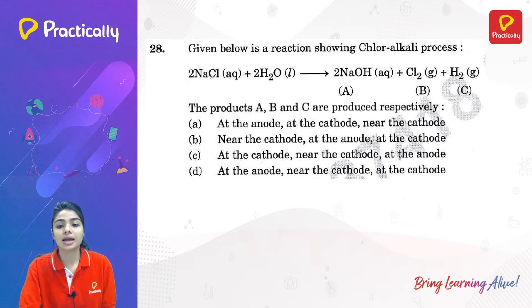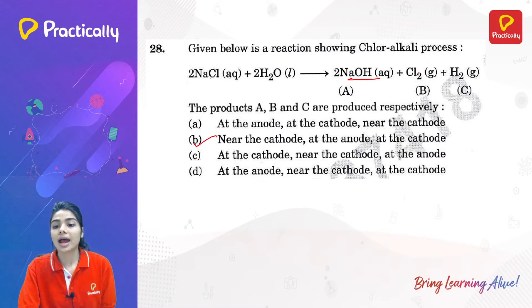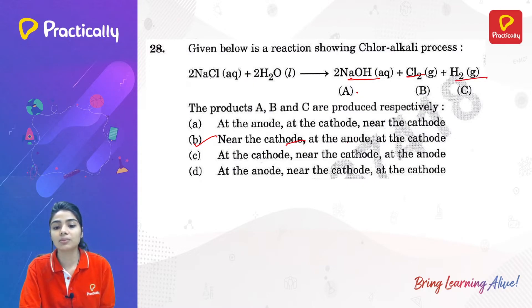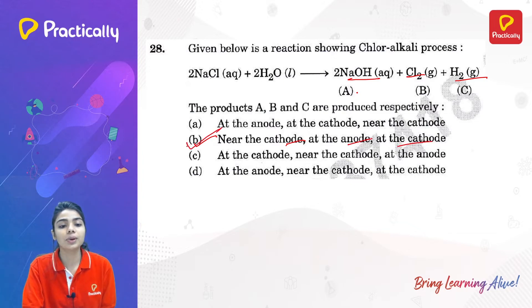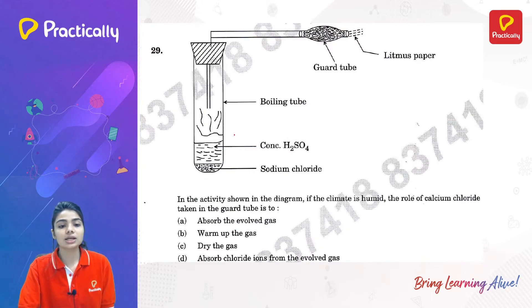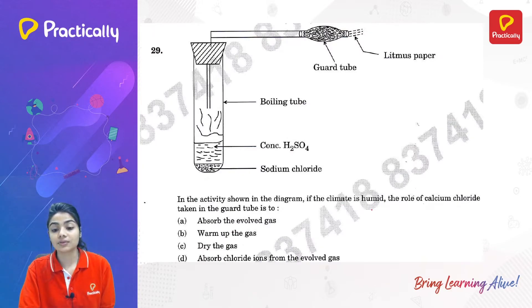A reaction showing the chlor-alkali process: sodium hydroxide forms near the cathode, chlorine is produced at the anode, and hydrogen gas is produced at the cathode. So A is near the cathode, B is at the anode, and C is at the cathode. Option B is the correct answer.